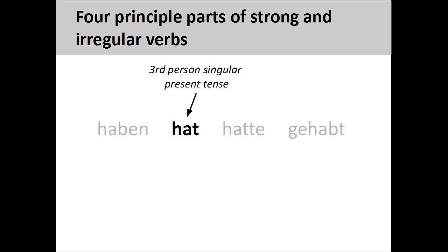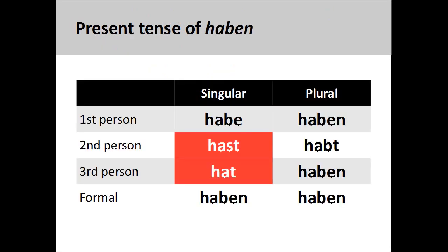As this presentation focuses on the present tense conjugation of strong and irregular verbs, we will only be dealing with the second principal part — the third person singular present tense verb form. We will look at the other principal parts in future presentations. The second principal part is important as it lets us know that the verb we are conjugating has unpredictable variations in the second and third person singular, which is a typical characteristic of most irregular and strong verbs.